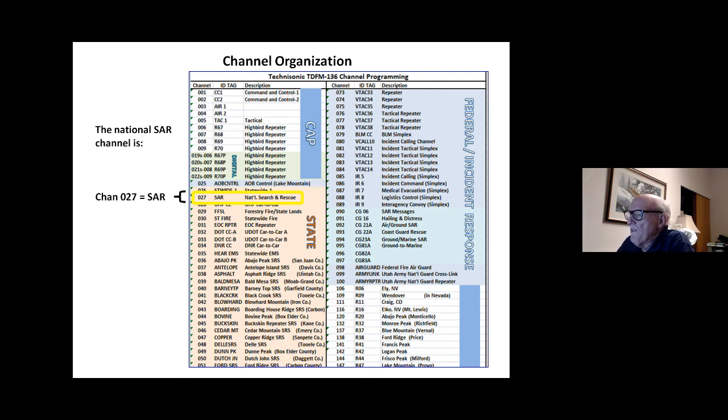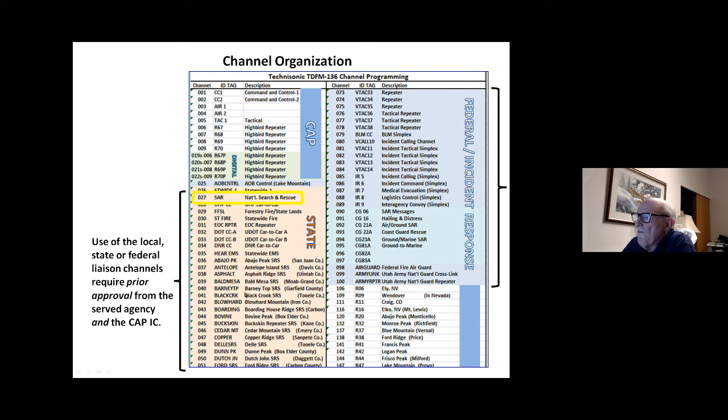Let's talk about the other common channel we generally will use in working with a county government, the sheriff search and rescue team, the national SAR channel, that's on channel 27. You have to dial in three digits, channel 027, for the national search and rescue channel in the Technasonic. Now any use of these state and local or federal liaison channels, we use those only when we're working with another agency in support of that agency and only by the request of that agency and with approval from RIC. We really can't be transmitting on these channels because the state is using these for their own operations.